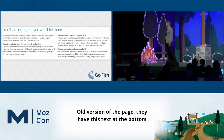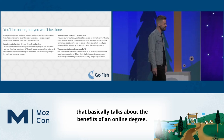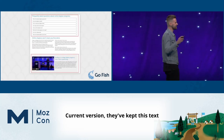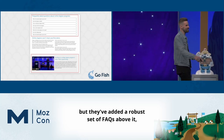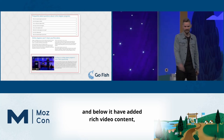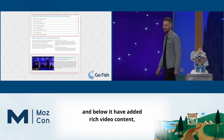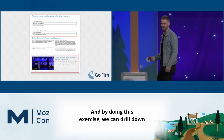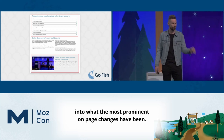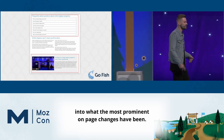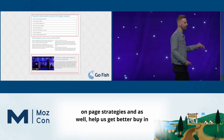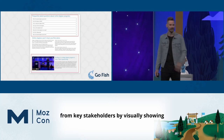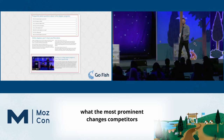Old version: text at the bottom talking about the benefits of an online degree. Current version: they've kept that text but added a robust set of FAQs above it and rich video content below it — a change of content and UX. By doing this exercise we can drill down into the most prominent on-page changes, which helps better inform our own on-page strategies and get better buy-in from key stakeholders by visually showing what changes competitors have been making.